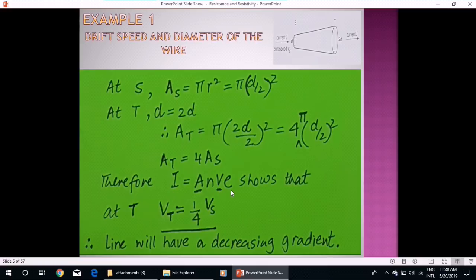Now using this equation which we have studied in our first lecture in electricity, that current through a wire is equal to A N V and E, where A is the area, N are the number of electrons, E is the charge on electron, and V is the drift speed.